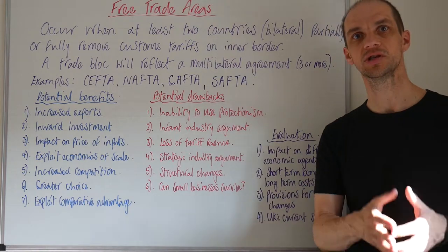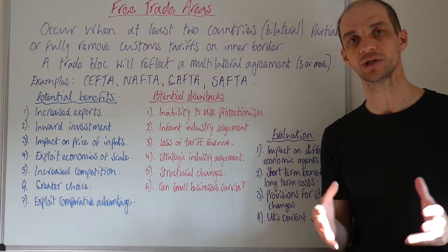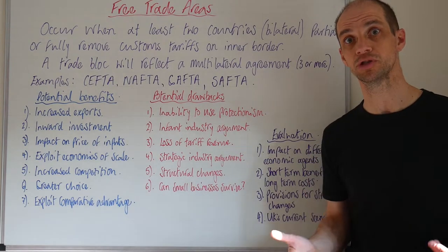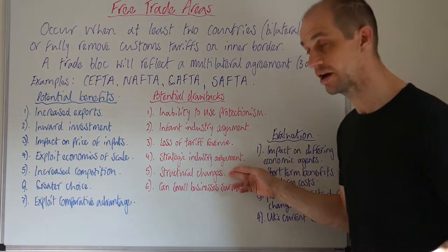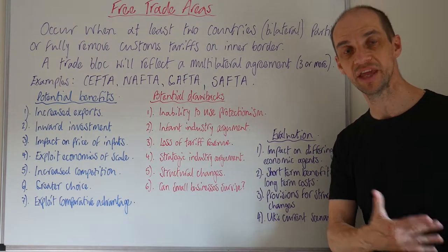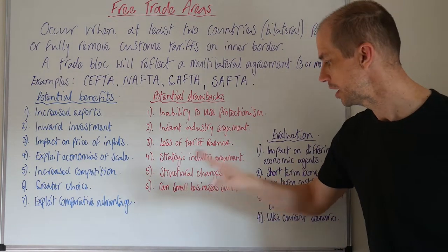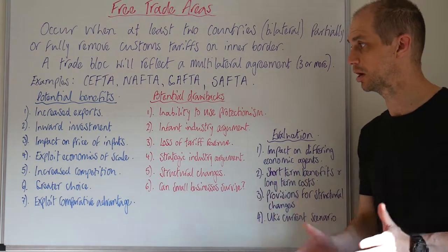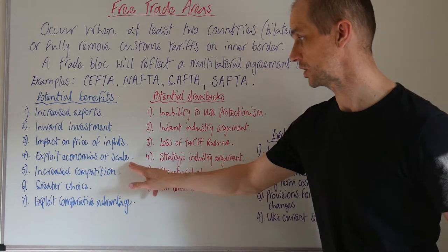These free trade areas can, depending on the types of countries that come together, cause structural changes. Within NAFTA, for example, with Canada, America and Mexico — Mexico is the lowest cost producer — it has caused structural changes to the manufacturing industry in America. What does that mean for that workforce? It can certainly cause structural unemployment. And what about small businesses — will they be able to survive and compete with multinational corporations? This sort of agreement is likely to really benefit larger companies that can exploit those economies of scale.